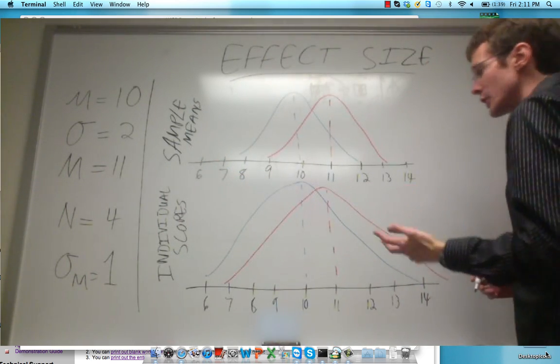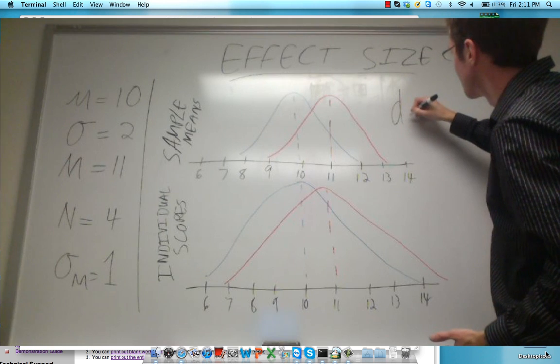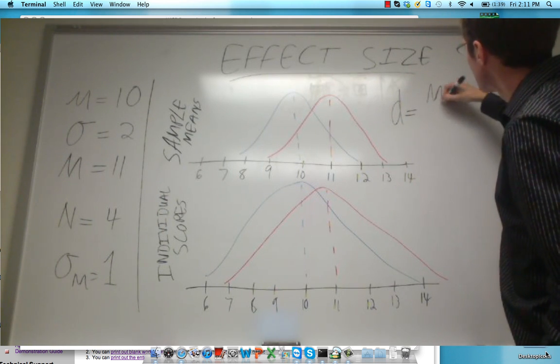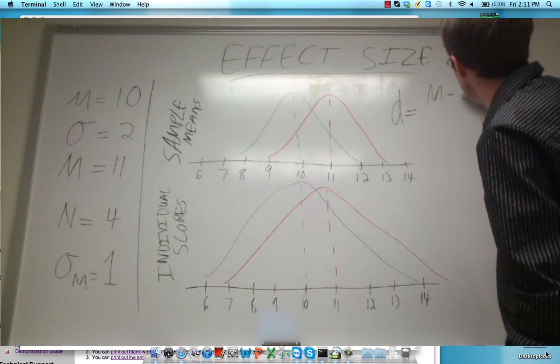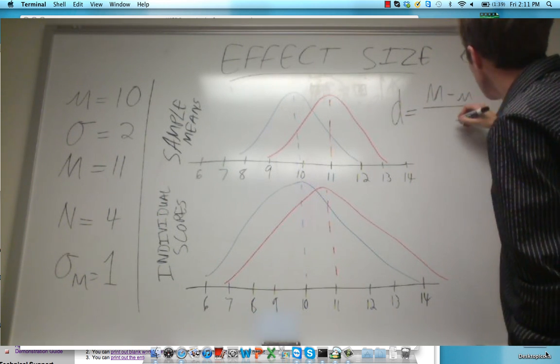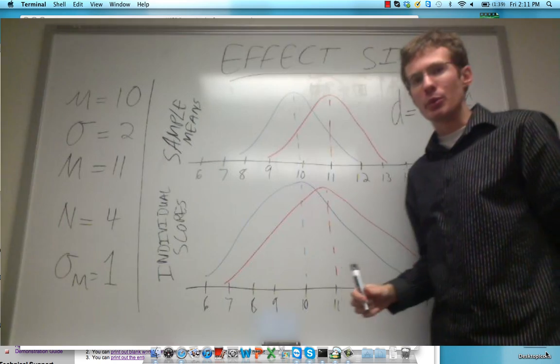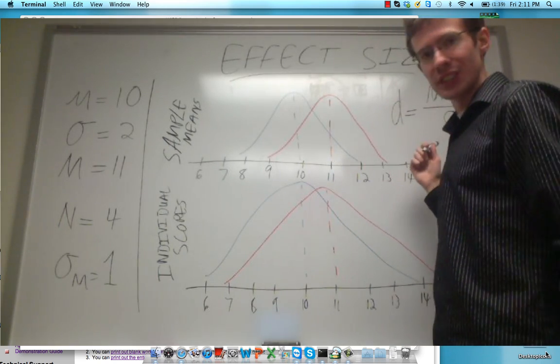The calculation for an effect size is symbolized by d and we simply subtract the population mean from our observed mean represented by m. So m minus mu divided by the population standard deviation or sigma.